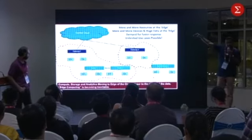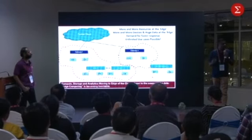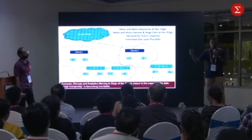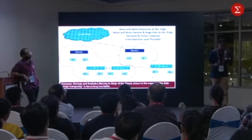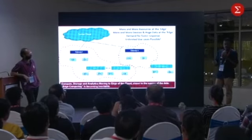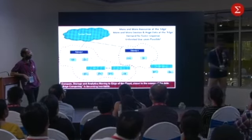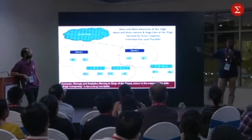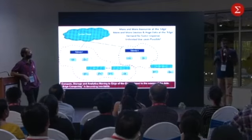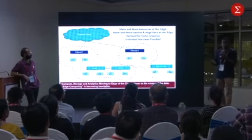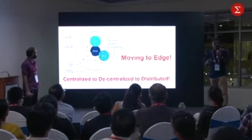I call north the cloud and south the edge. When you have more power at the south — power in the sense of storage, compute, and network speed such as 5G — you have compute, storage, and network speed all available at the edge, very close to your sensors. So will you still send all the data to the cloud? No, we will do processing at the edge because it's faster. That's what's happening today.